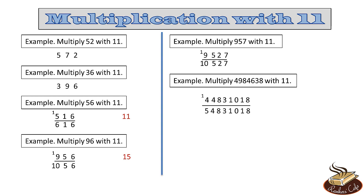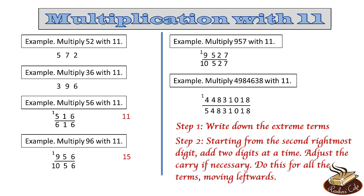So what are the steps for multiplying a number with 11? The first step is: write down the extreme terms. Then, starting from the second rightmost digit, we add 2 digits at a time. If there is a carry, carry it over to the left side. We do this process till the leftmost term. I hope the process of multiplying with 11 is now clear.